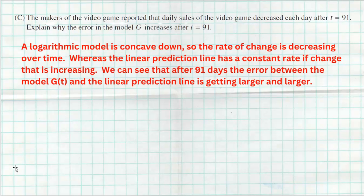Hopefully that all makes sense. This is not too bad of a question. A lot of kids are going to want to use their calculator to get a and b back in part A, but because of that T plus one, you have to do it by hand — though it's actually pretty simple math, nothing overly complicated. Hope you guys did well on this problem.